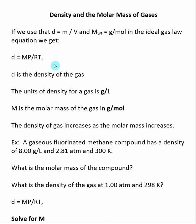And what we end up with is this equation: d is equal to MP divided by RT. The d in this case is the density of the gas and the units on the density of a gas is grams per liter.